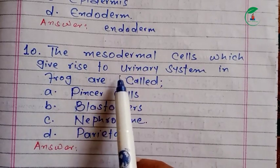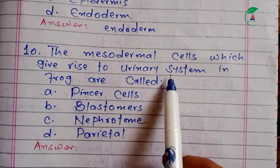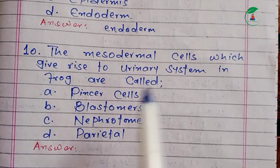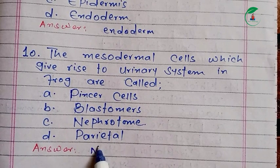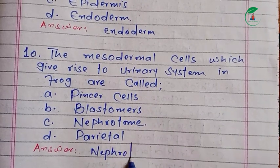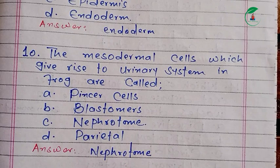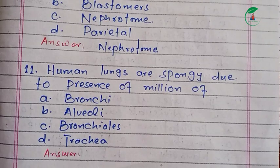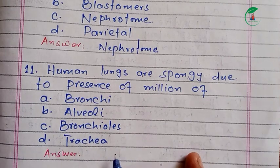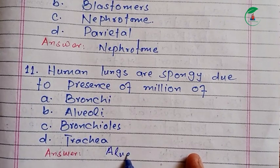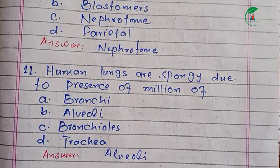Question ten: the mesodermal cell gives rise to the urinary system. Regarding human lungs, if the lungs are a small part of the respiratory system, it is very important. The structure includes bronchioles, bronchitis, and the trachea. There are millions of alveoli in the lungs.